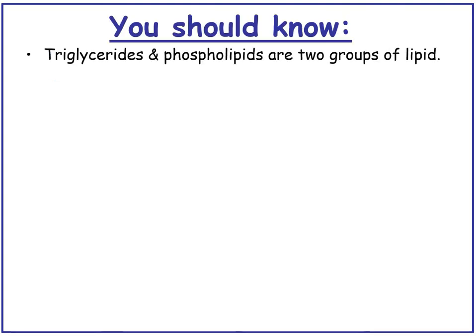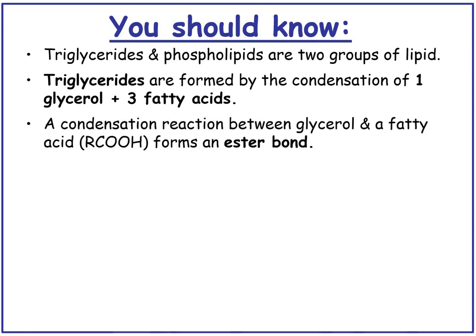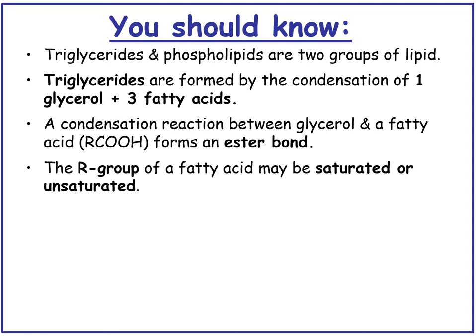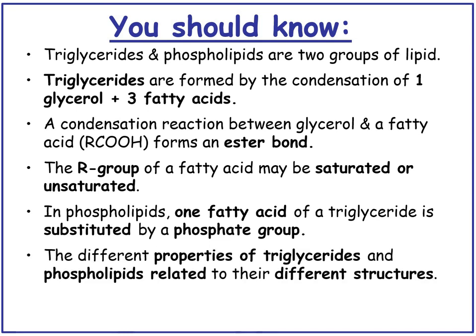You should now know that triglycerides and phospholipids are two groups of lipid. Triglycerides are formed by the condensation of one glycerol and three fatty acids. The condensation reaction between glycerol and the fatty acid (RQ) forms an ester bond. The R group of the fatty acid may be saturated - containing no double bonds - or unsaturated, where it contains at least one double bond. In phospholipids, one fatty acid of a triglyceride is substituted by a phosphate group. You also need to know the emulsion test for lipids.